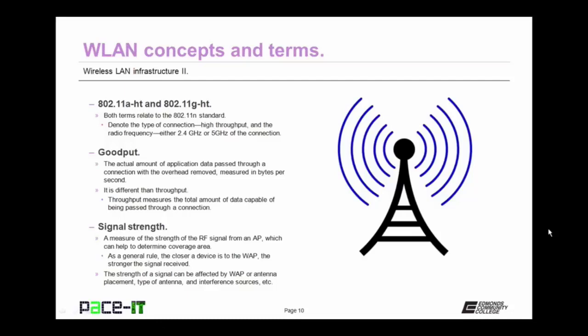Now let's talk about 802.11a-ht and 802.11g-ht. Both of these terms relate to the 802.11n standard. They denote the type of connection — a high throughput connection — and the radio frequency, which will either be the 2.4 GHz radio frequency band or a 5 GHz connection. Then there's goodput. Goodput is the actual amount of application data passed through a connection with the overhead removed. It's measured in bytes per second. It is different than throughput. Throughput measures the total amount of data capable of being passed through a connection, so it includes network overhead.